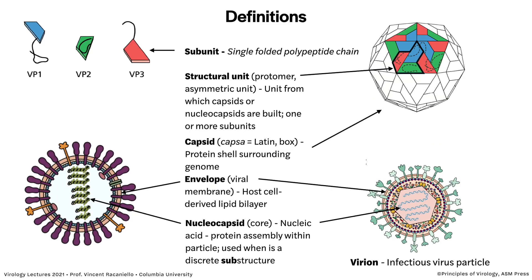Before we go further, we need to define some terms. First, subunit — I mean a single folded polypeptide chain. Here are three single folded polypeptide chains, with nomenclature like VP1, VP2, and VP3 — virion proteins. Each of these is a single polypeptide that goes to build the virus particle. That's what a subunit is.